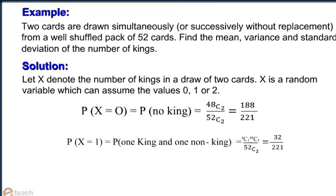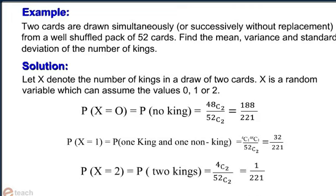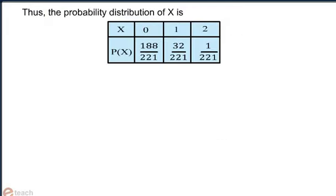Probability of x equal to 1, that is 1 king and 1 non-king is obtained, equals 4C1 times 48C1 divided by 52C2, that is equal to 32 by 221. And probability of x equal to 2, that is 2 kings are obtained, equals 4C2 divided by 52C2, that is equal to 1 by 221. Thus, the probability distribution of x is as shown.